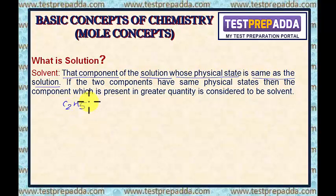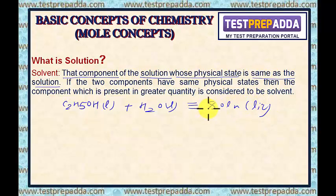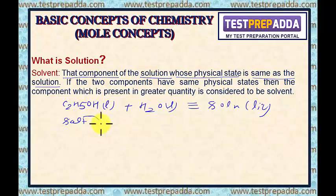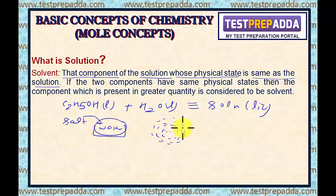But many times, if you mix C2H5OH — which is liquid — with water — which is also liquid — the physical state of the solution will also be liquid. If the two components have the same physical state, then the component which is present in greater quantity is considered to be the solvent. The meaning of dissolution is: when you put salt in water, water molecules will surround the salt particles — this is called dissolution, and this way solution is obtained.